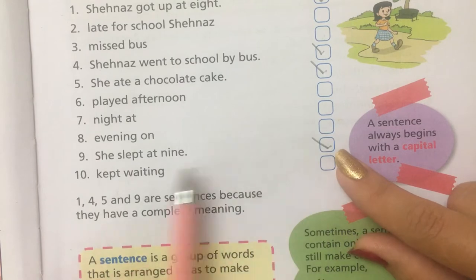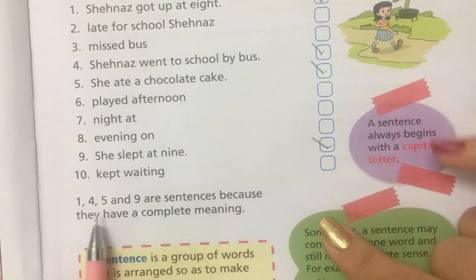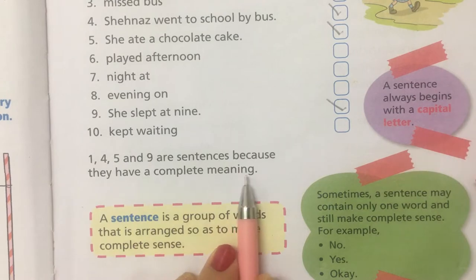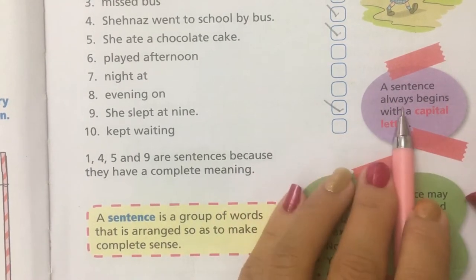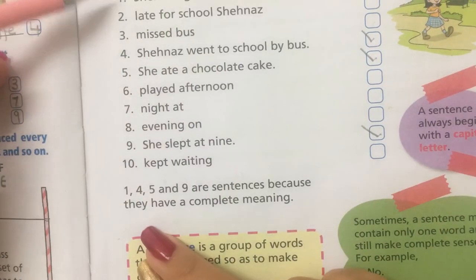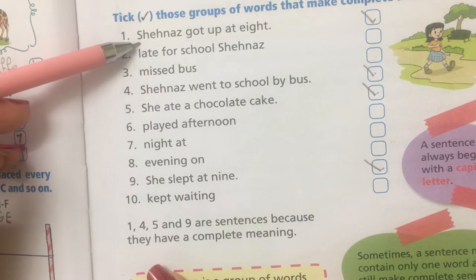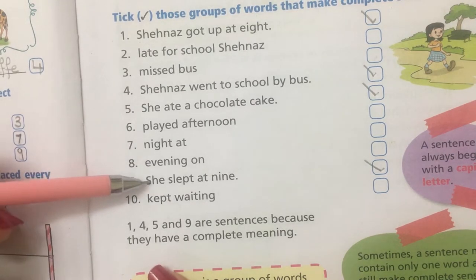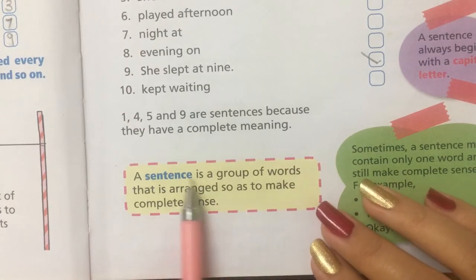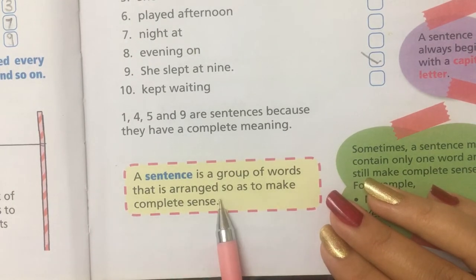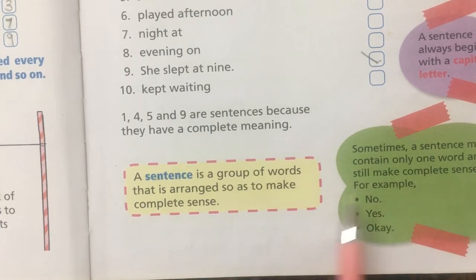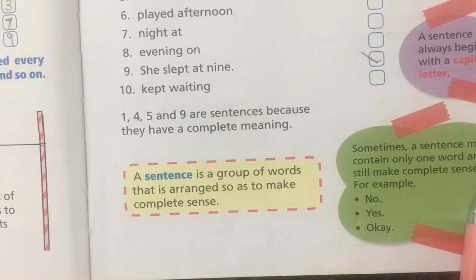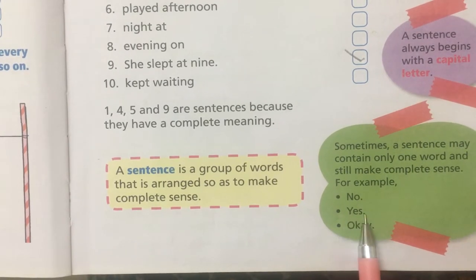She slept at nine — yes. Kept waiting — no. So numbers one, four, five and nine are sentences because they have a complete meaning. Just remember that a sentence always begins with a capital letter. A sentence is a group of words that is arranged so as to make complete sense. Remember that sometimes a sentence may contain only one word and still make complete sense — for example: no, yes, okay.